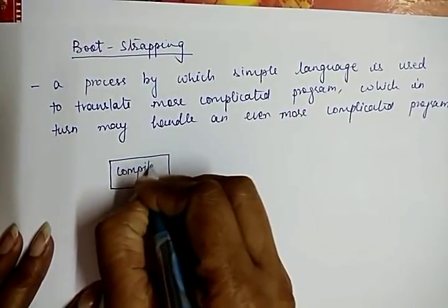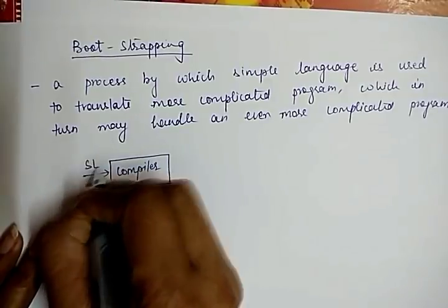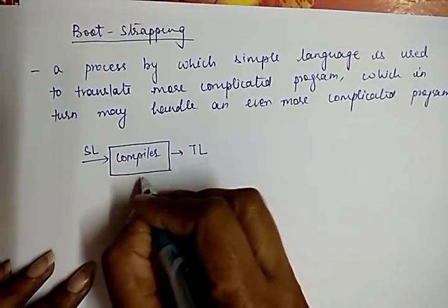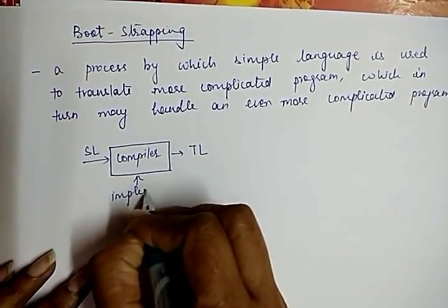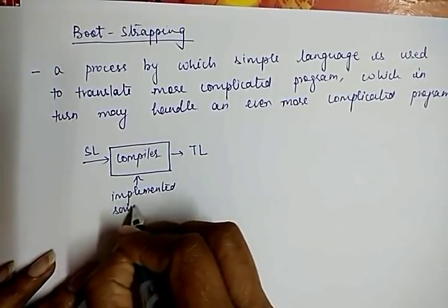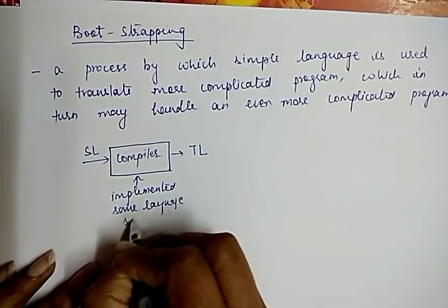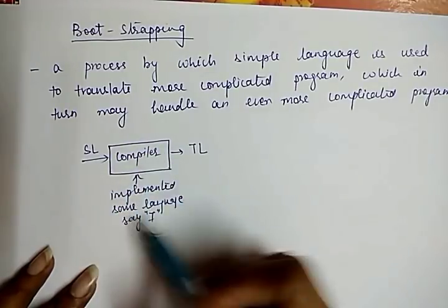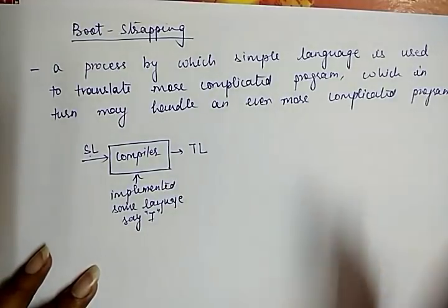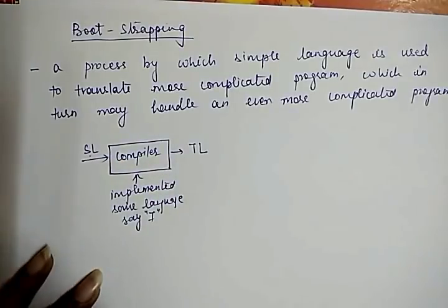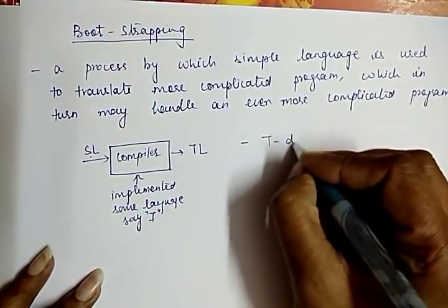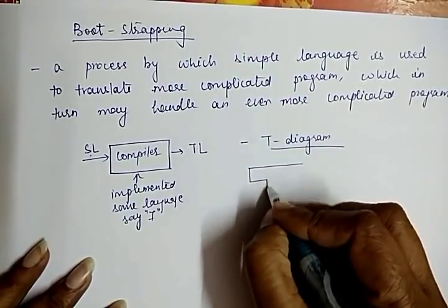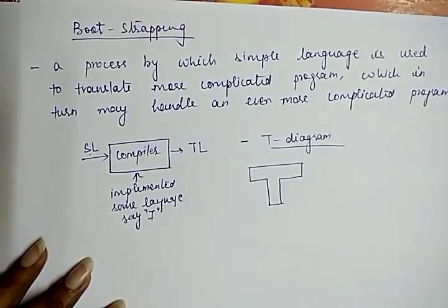The function of a main compiler is that it converts the source language into some target language. If we assume that this compiler is implemented in some language, say I, and by using this compiler we convert the source language into a target language, then in bootstrapping this whole block diagram can be represented by a T-diagram.